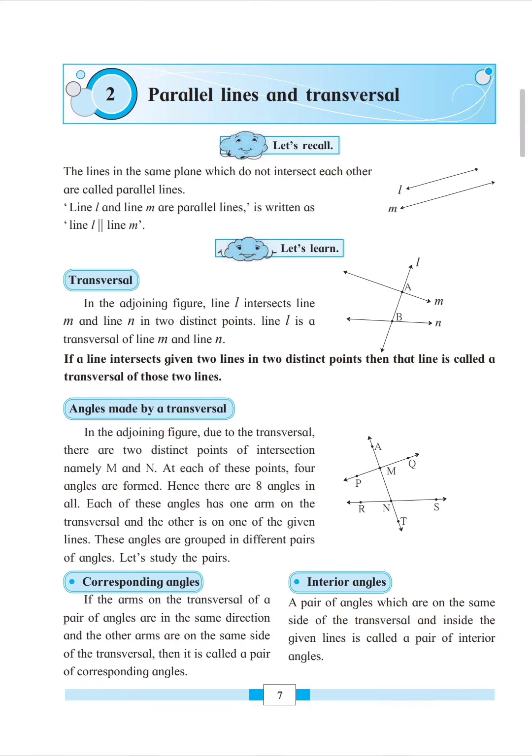These angles are sometimes corresponding, sometimes interior, sometimes alternate. Corresponding angles are angles which are in the same direction and on one side of the transversal. If on the left side, both corresponding angles will be to the left. If on the right side, both will be on the right.